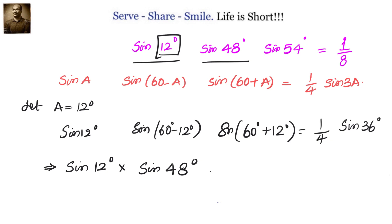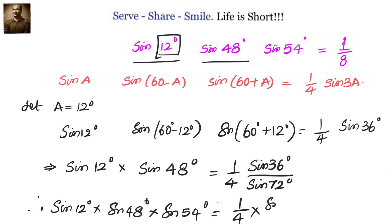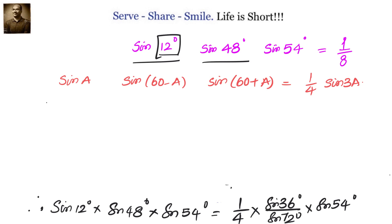Now what we want is sin 12 degrees into sin 48 degrees into sin 54 degrees. So let's multiply both sides by sin 54 degrees divided by sin 72 degrees. The left-hand side will now be equal to 1/4 into sin 36 degrees divided by sin 72 degrees, multiplied with sin 54 degrees.